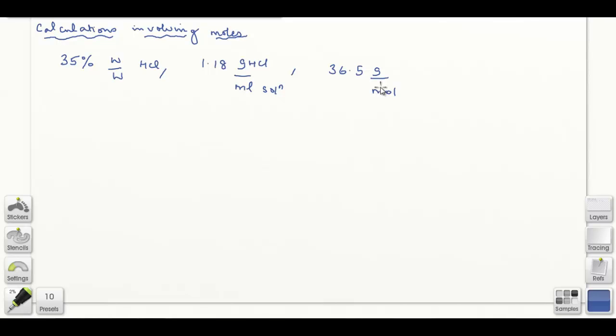What we have to find out is the molarity of hydrochloric acid. Molarity is a unit for concentration expressed in moles per unit volume. In the UK, we use decimeter cubed, which is the same as a liter. So we need to convert these three numbers into moles per decimeter cubed.